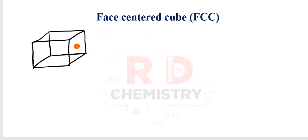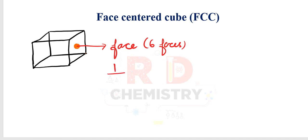Next, in the face-centered cube (FCC), there are particles on the faces — these are called face particles. There are 6 faces in a cube, and each face is shared by 2 unit cells. Therefore the contribution is 1/2 × 6 = 3. So the six faces contribute 3 particles per unit cell.